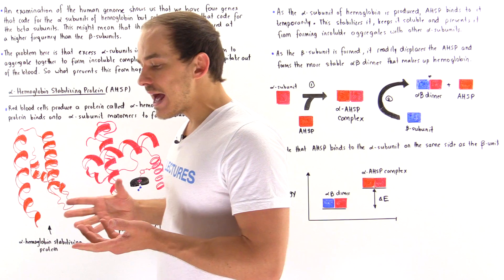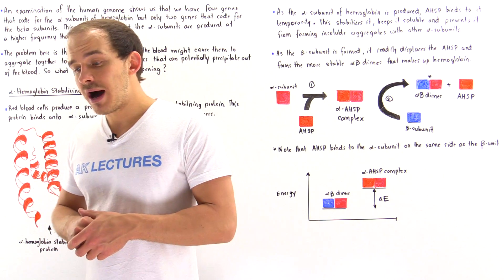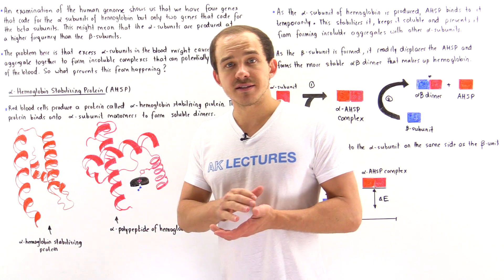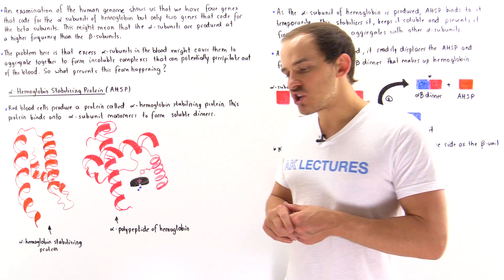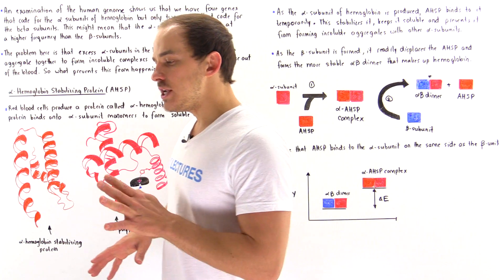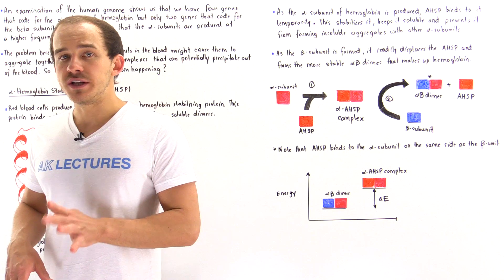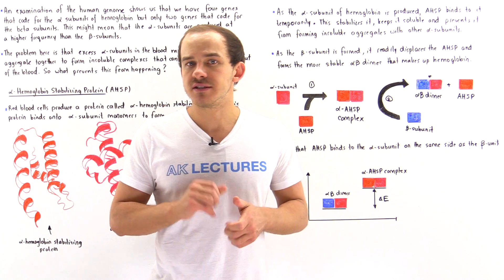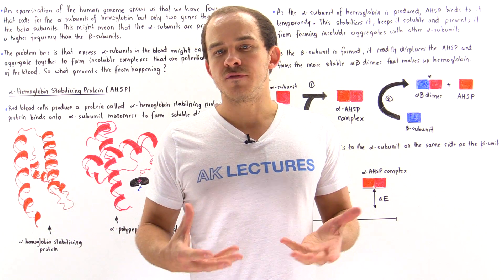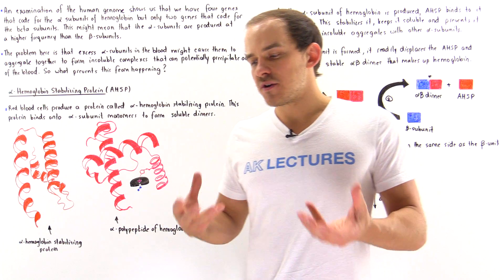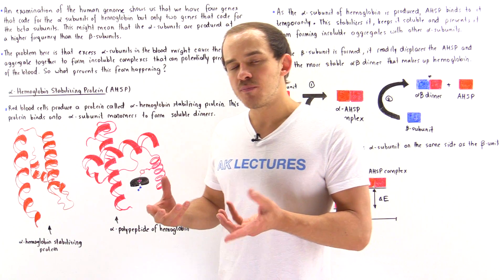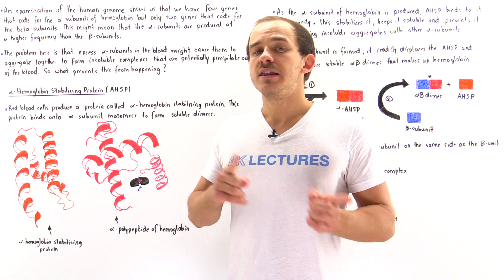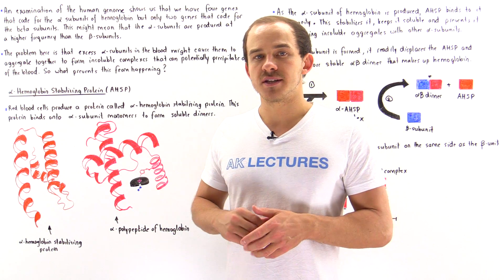If we examine the human genome — all the DNA molecules found inside the human cell — we're going to find four genes that code for the alpha unit, but we're only going to find two genes that code for the beta unit. So inside our genome, we have twice as many genes that code for the alpha subunit than the beta subunit.